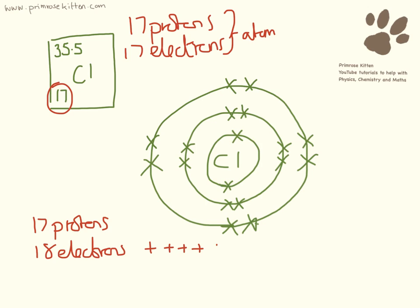Counting the charges: 17 protons and 18 electrons. And we can see that this electron here is extra, so we can see that chlorine has a negative overall charge.